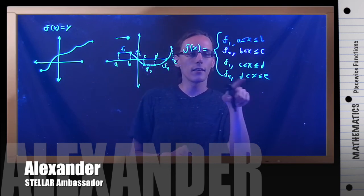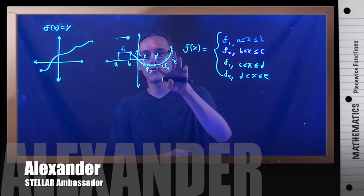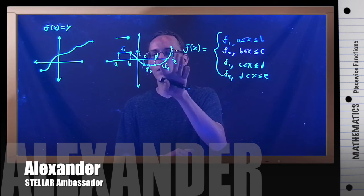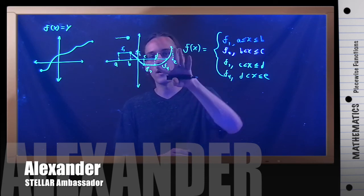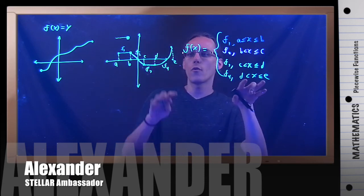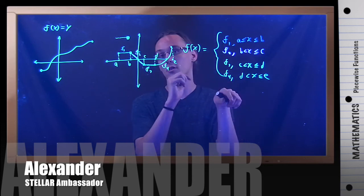And then here, this is probably some sort of form of x squared, like maybe x minus D squared or something like that. So for in between D and E, plug numbers into that function.